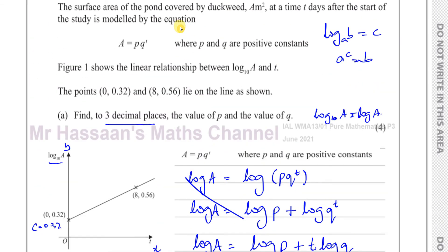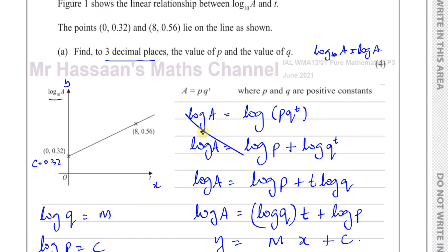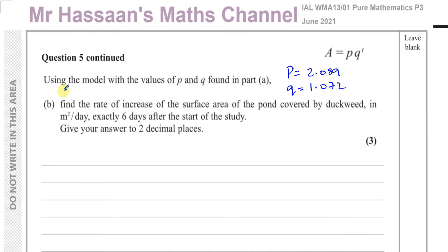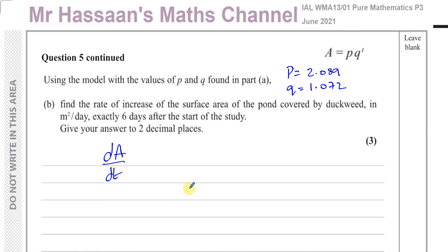Now for part b, using the model with the values of p and q found in part a, we need to find the rate of increase of the surface area of the pond covered by duckweed in metres squared per day, exactly six days after the start of the study, giving the answer to two decimal places. We don't want the area after six days — we want the rate of increase, so we need to find dA/dt.